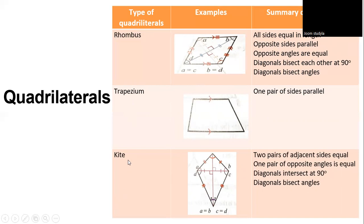A kite has two pairs of adjacent sides that are equal, one pair of equal opposite angles, diagonals that intersect at 90 degrees, and diagonals that bisect the angles. Where A = B and C = D. These are the properties you must memorize.